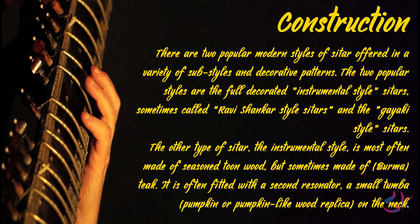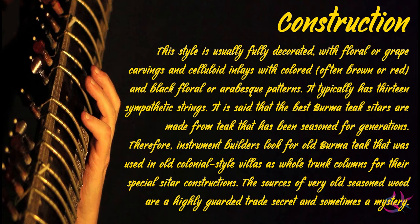There are two popular modern styles of sitar offered in a variety of sub-styles and decorative patterns. The two popular styles are the fully decorated instrumental style sitar, sometimes called the Ravi Shankar style sitar, and the Gayaki style sitar. The instrumental sitar is most often made of seasoned tun wood, but sometimes made of Burma teak wood. It is often fitted with a second resonator — a small tumba, pumpkin, or pumpkin-like wood replica on the neck. This style is usually fully decorated with floral or grape carvings and celluloid inlays with colored floral or arabesque patterns. It typically has 13 sympathetic strings.